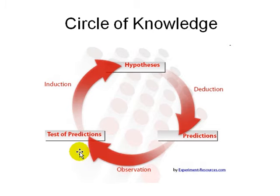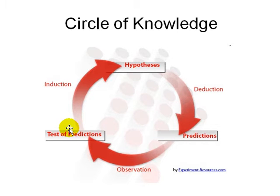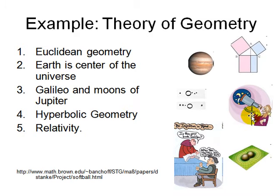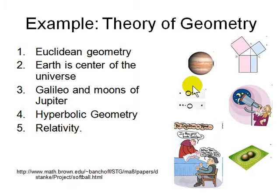This is the circle of knowledge: you make a hypothesis by induction, then do deduction to make predictions about the future, then make observations to test those predictions against the theory. The most common example comes from geometry. Two thousand years ago people thought the earth was flat and the center of the universe. Then Galileo built a telescope, observed Jupiter and its moons moving daily, and eventually concluded that all planets revolve around the Sun — so the geometry had to be revised.